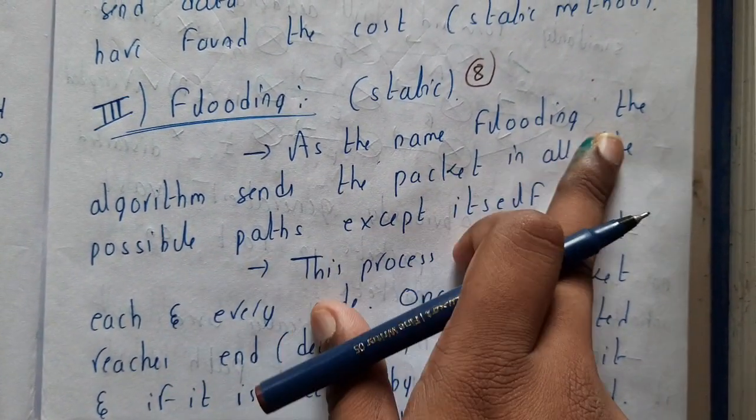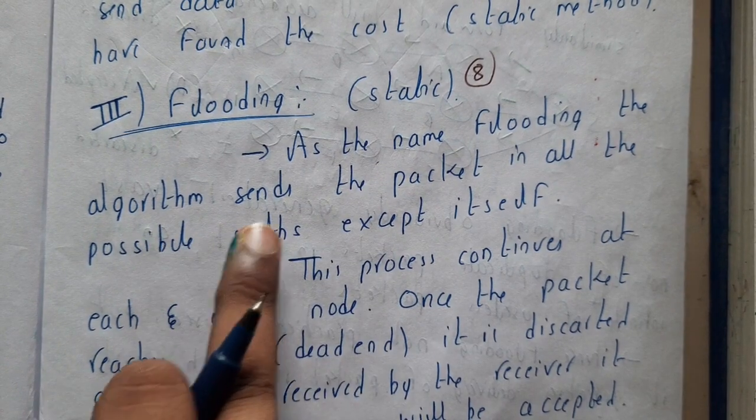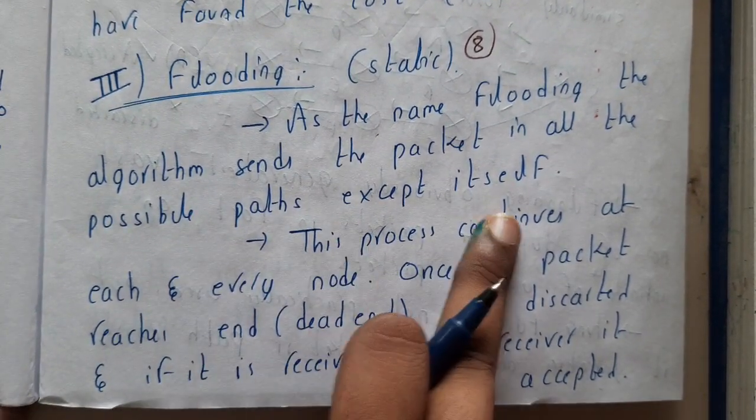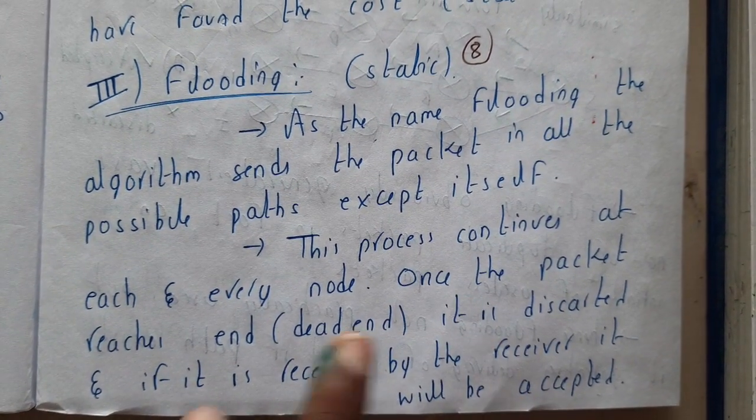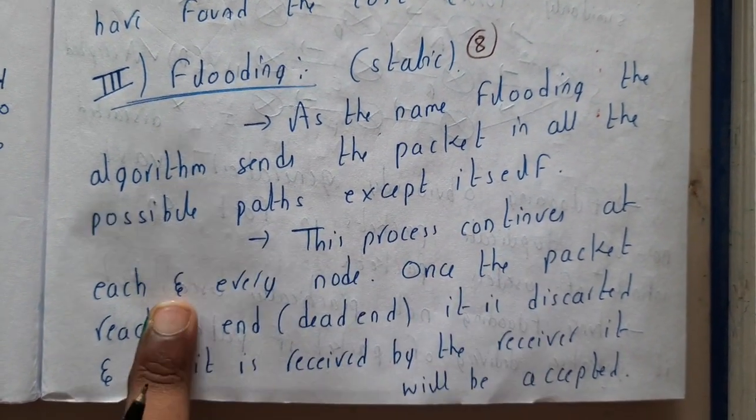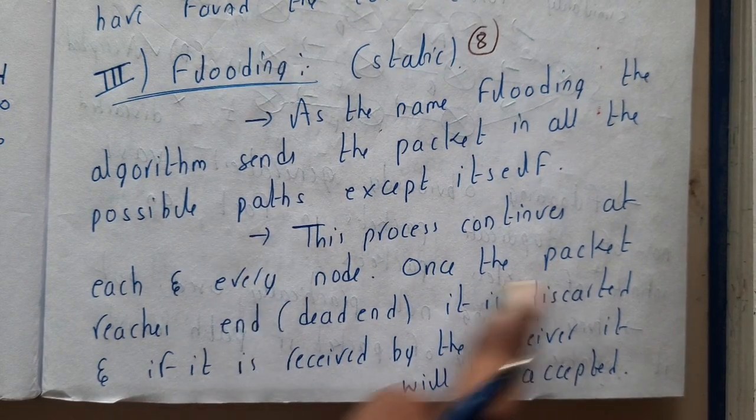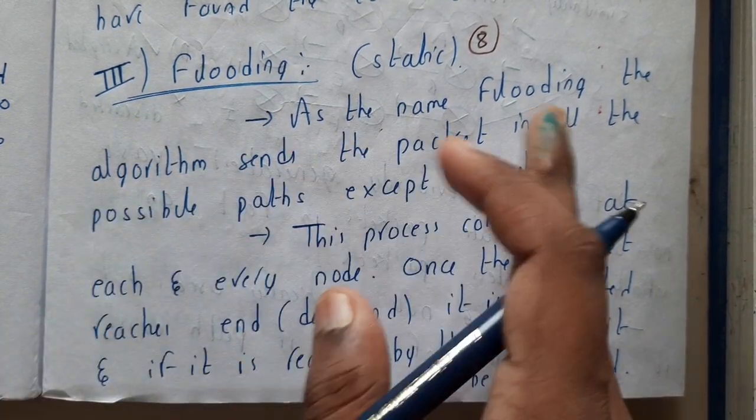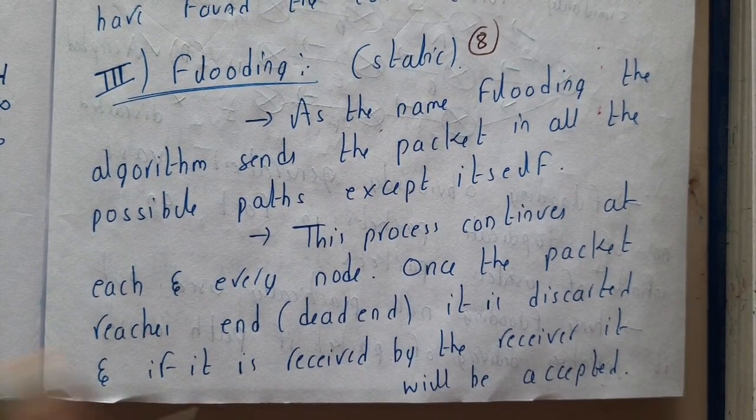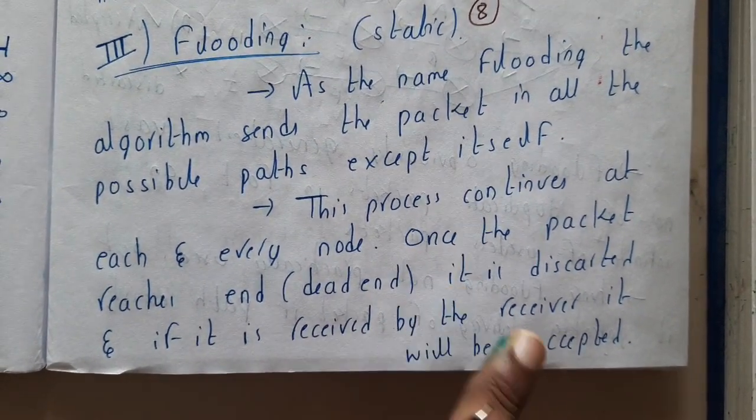As the name flood suggests, the flooding algorithm sends packets in all possible paths except to itself. It will not send to itself but will send to all other paths. This process continues at each and every node. Once the packet reaches the end, if it reaches a dead end it will be discarded if it is not the destination, else if it reaches the destination it will be accepted.